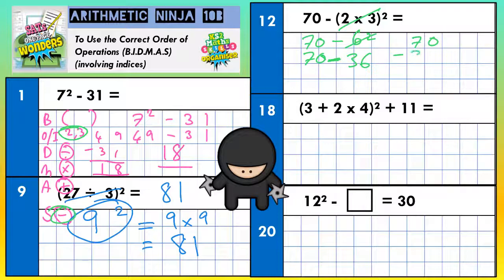Can't do that in your head. Quick column method. Nothing takes 6 we can't do, so borrow. 7 becomes 6. The one we borrowed is 10. 10 take away 6 is 4. 6 take away 3 is 3.